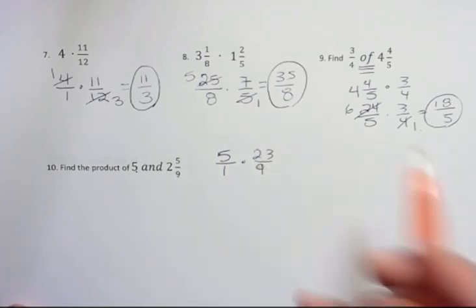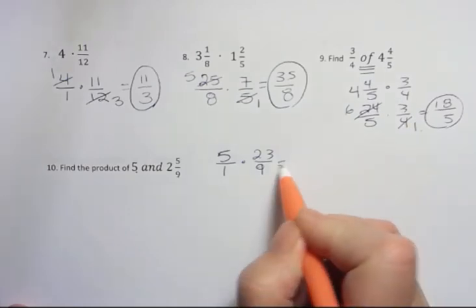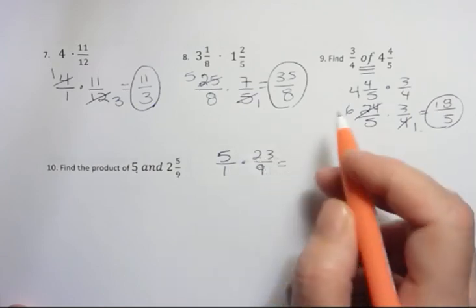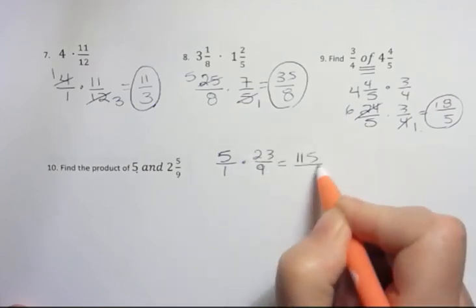And now we're going to cross-cancel, but there's nothing to cross-cancel here. Sometimes there isn't. So we're just going to multiply straight across. We're going to get 115 over 9.